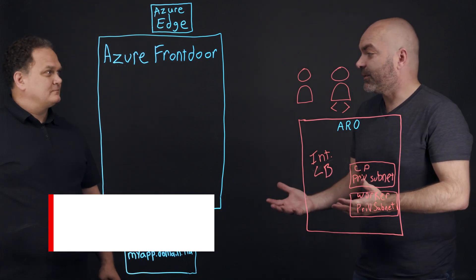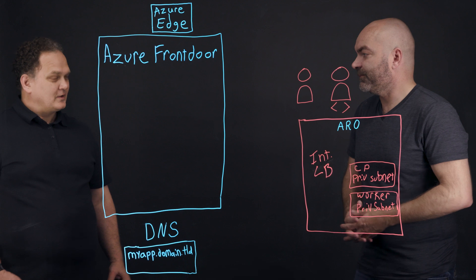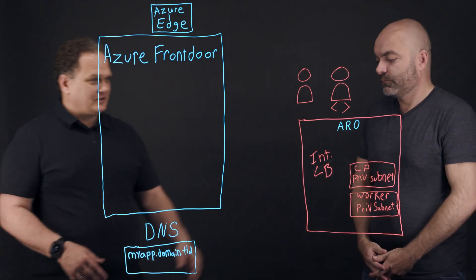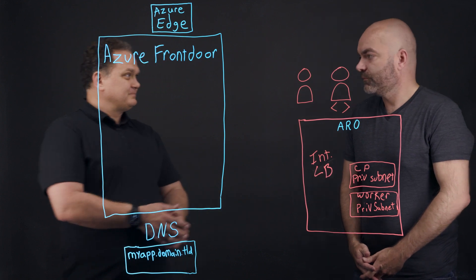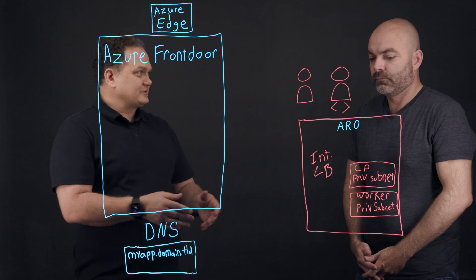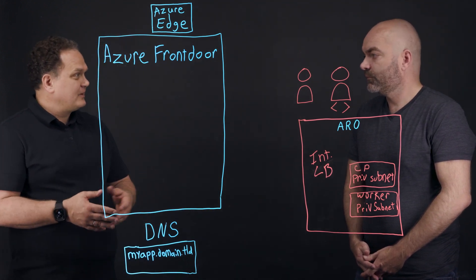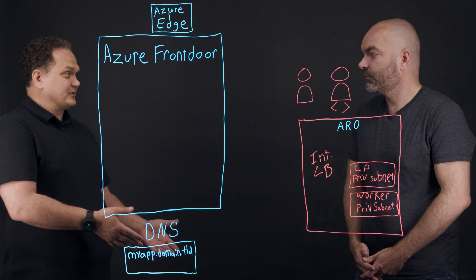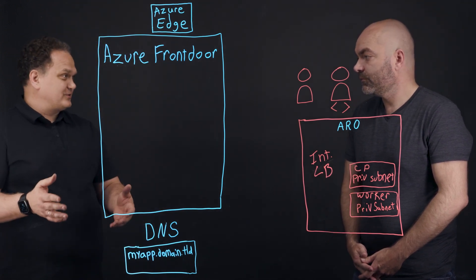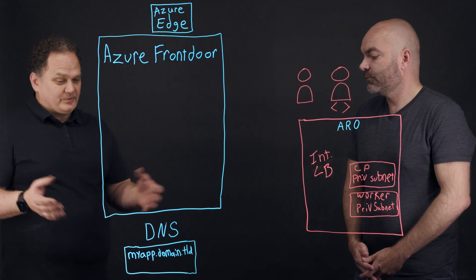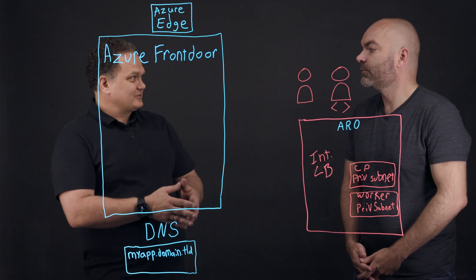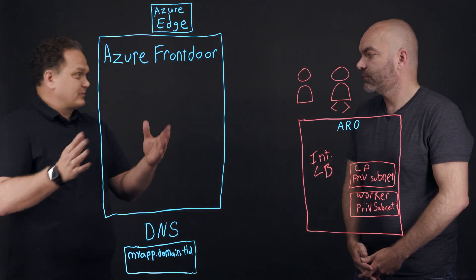So today we're going to talk about Azure Front Door. Specifically, we're going to talk about Azure Red Hat OpenShift, also known as ARO, and how that can integrate with Azure Front Door. ARO is a turnkey application platform that enables developers and operations to be more efficient. And we have Azure Front Door, which is a turnkey networking solution that developers can use to connect their applications using advanced networking technologies to provide capabilities that we're going to talk about today.